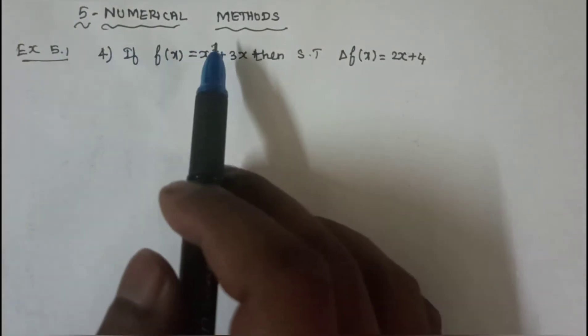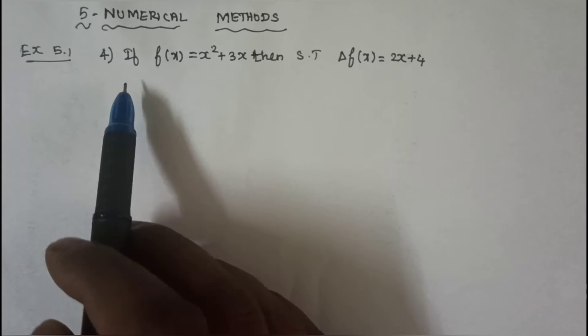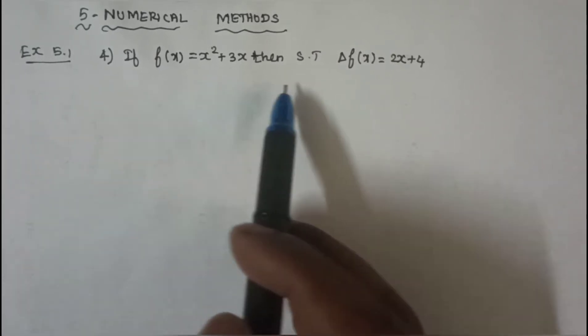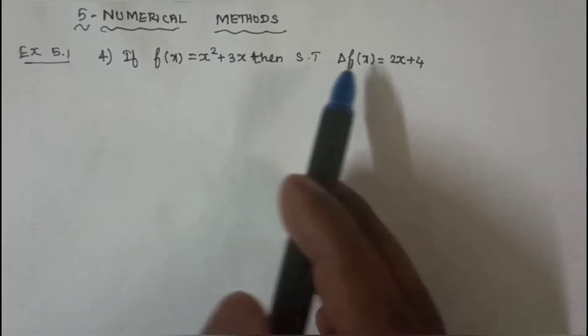Students, 5th chapter, Numerical Method, exercise 5.1, 4th sum. If f(x) equal to x cube plus 3x, then show that delta f(x) equal to 2x plus 4.